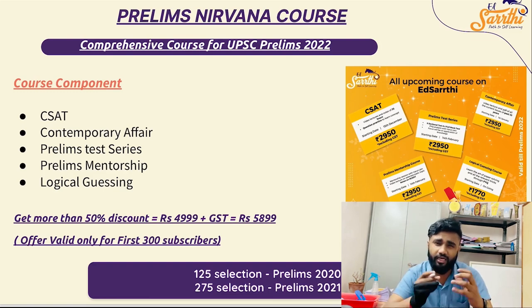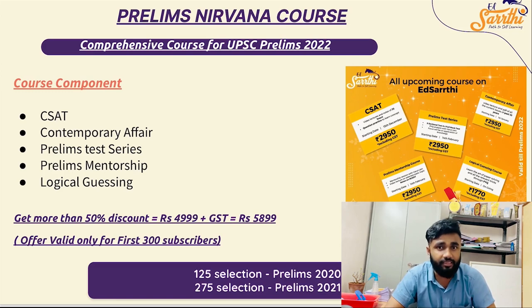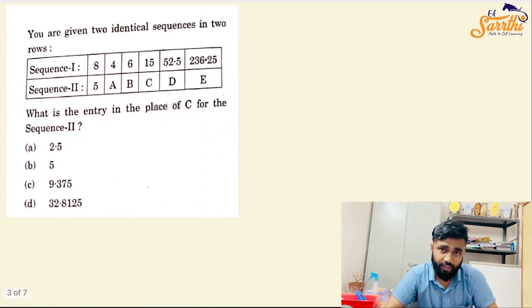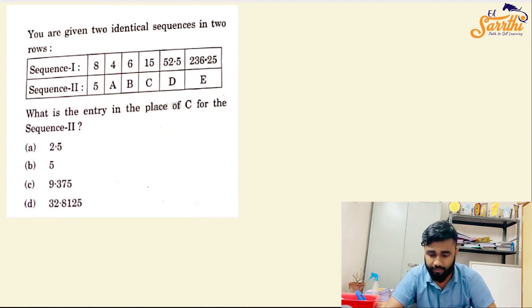All of these combine at a very effective price range of Rs. 5900 including the taxes. But the offer is only for the first 300 subscribers. If you haven't done it, do it. Now, coming back to which you are watching this video, which is the solution of the number series question which you asked previously. Now, let's take a look at this question.